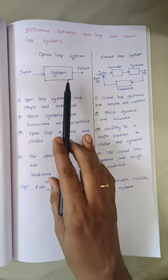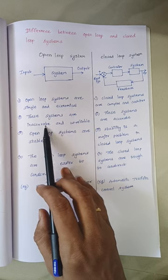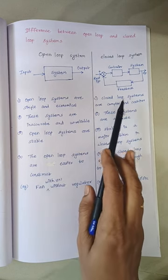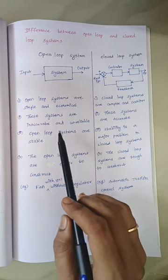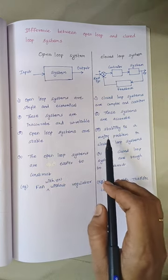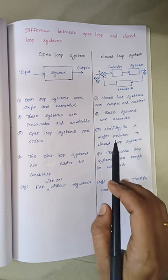Open loop system output is inaccurate and unreliable, whereas closed loop systems are always accurate. Open loop systems are more stable, whereas for closed loop systems, stability is a big problem.